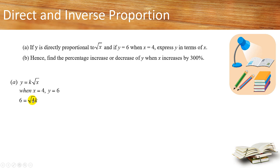You get 6 equals to square 4 times k. And square 4 is 2, so k will be 6 over 2 which is equals to 3. So therefore the equation will be y equals to 3 times square x.